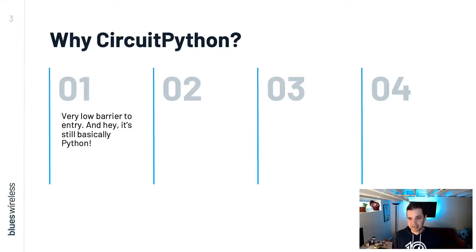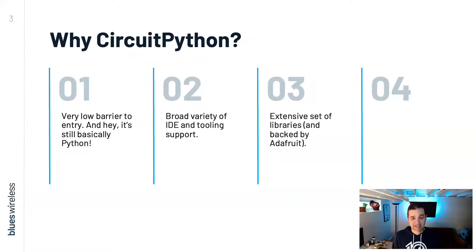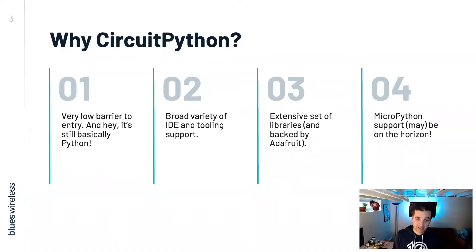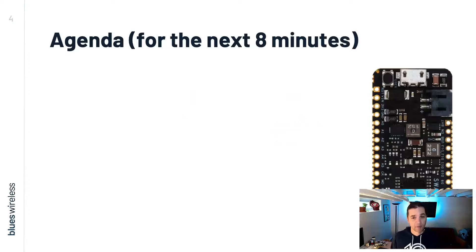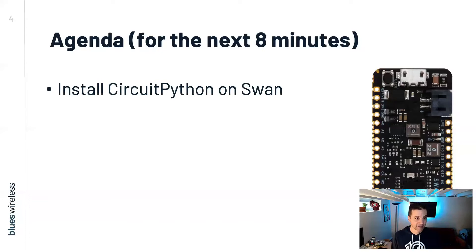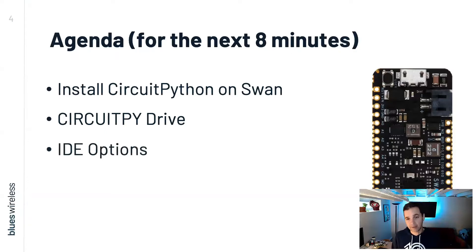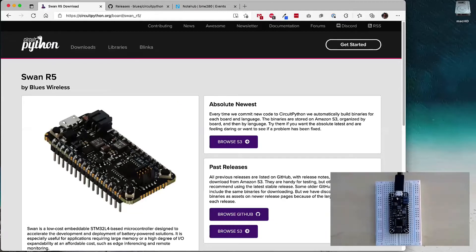Why CircuitPython? We've had active forum discussion about why we chose CircuitPython versus MicroPython. CircuitPython has a very low barrier to entry — if you think MicroPython is easy, CircuitPython takes that next step, and it's all just Python at the end of the day. There's a vast array of tooling support — Mu, VS Code, Sublime Text. CircuitPython also has an extensive set of libraries for all sorts of peripherals, and the core is lovingly backed by Adafruit. We're also starting to look at potential MicroPython support as well — no promises today.